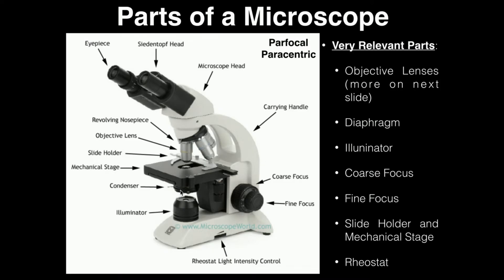We also have what's called a condenser. The condenser condenses light — you can see it right here with a little switch sticking out, and that little switch is called the diaphragm. What the diaphragm does is it affects the contrast of the image that you're seeing. You can have high contrast or low contrast, and depending on how you're seeing the object, you can rotate this as needed. There's no set rule for what position you have the diaphragm on — you just rotate it until you can see the specimen very well.